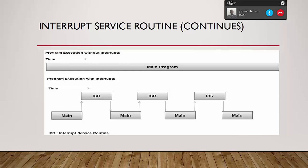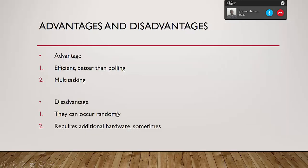Moving to slide 14, advantages and disadvantages of interrupts. Interrupts are efficient — better than polling, which wastes processing time by going around asking. Interrupts also enhance multitasking. However, a disadvantage is that they can occur randomly, and when they occur randomly that does not help the processor at all. Interrupts can also sometimes require additional hardware.